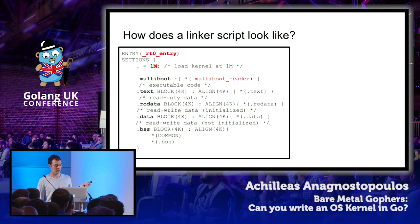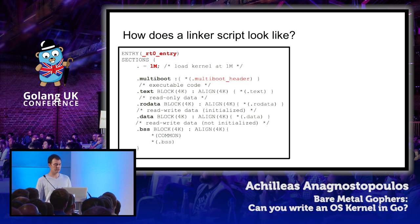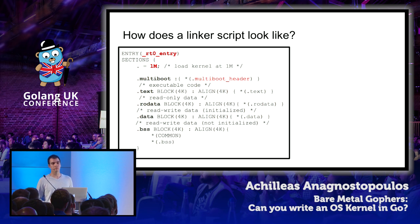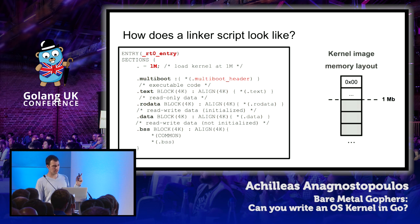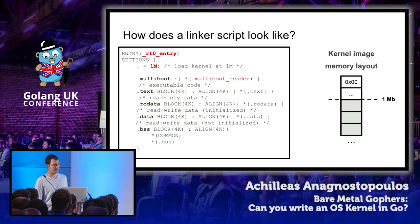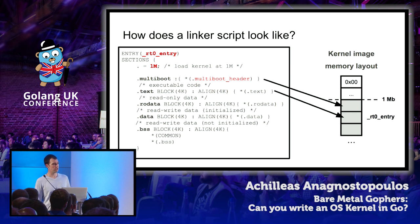This is what a linker script looks like. The first line defines the entry point symbol — written in assembly — which performs low-level initialization before jumping to the actual Go kernel implementation. The third line specifies the physical load address: I've selected the first megabyte, since some devices use memory below that region. The remaining lines specify where different parts of code and data are placed in memory — the multiboot header at the top, followed by the executable code section containing our entry point, then any data sections our code may reference.